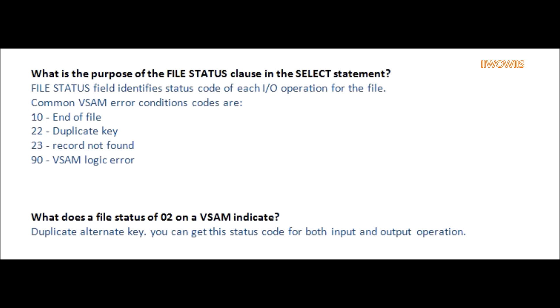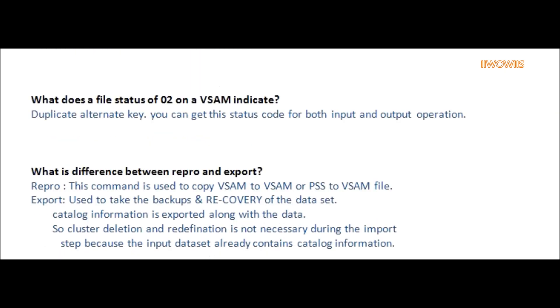Question: What does a file status of 02 for VSAM indicate? Answer: Duplicate alternate key. You can get this status code for both input and output operations.